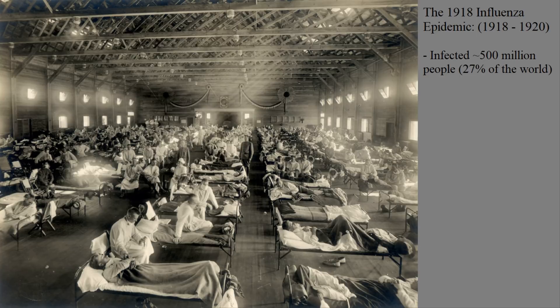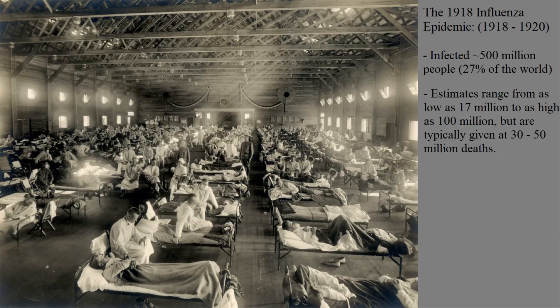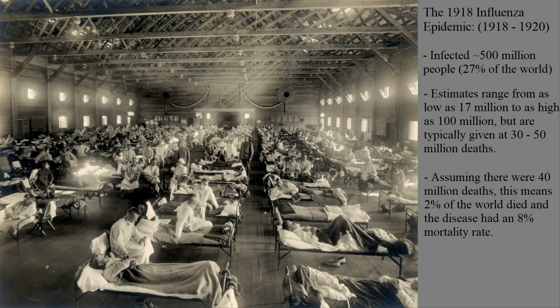Lasting from 1918 to 1920, this pandemic spread around the world and infected an estimated 27% of the world's population, or roughly 500 million people. The death toll is much more variable, with some estimates as low as 17 million people, but some as high as 100 million people, with the average numbers tending to be between 30 and 50 million. Using an average guess of 40 million people, that means a death toll of roughly 2% of the entire world population, giving the disease a roughly 8% mortality rate.